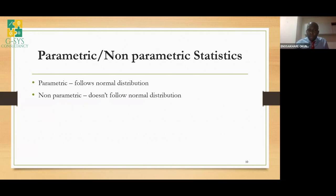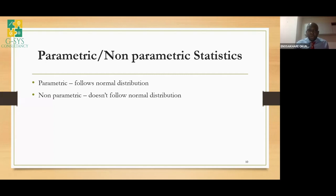Parametric statistics apply when continuous data follows a normal distribution. You can check normality by plotting a normality curve, though sometimes it's hard to tell visually. There are two main tests used for this: the Kolmogorov-Smirnov test and the Shapiro-Wilk test. If the data follows a normal distribution, choose a parametric test. If the data fails that test, use the non-parametric equivalent.